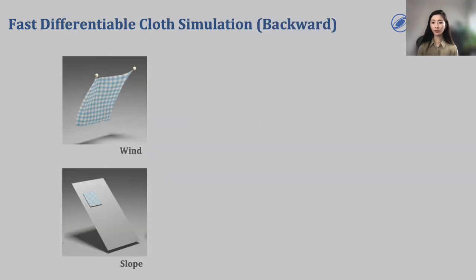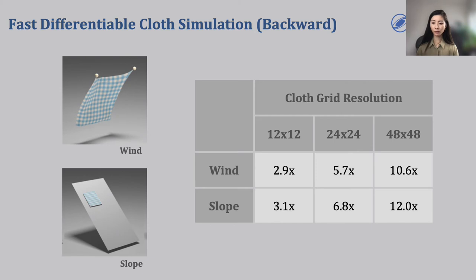To see how much benefit we can obtain from the iterative scheme, we designed these two benchmarking inverse tasks, wind and slope. In wind, we have a hanging square cloth blown by external wind force, and in slope, we have a square cloth sliding from a slope. The wind task is designed to have relatively small number of contact events, while slope has a relatively large number of contact events. Here's a table that shows the speedup we obtain from using an iterative solver. We repeat the task with different cloth mesh resolution, and overall we can achieve a 3 to 12 times speedup, and the larger the resolution of the cloth, the more speedup we obtain from using an iterative solver.